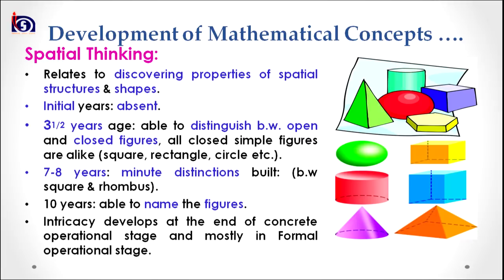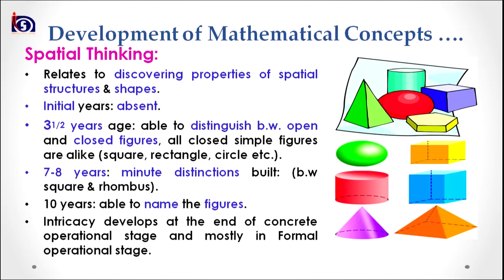The fourth type of concept under mathematical concepts is spatial thinking. Spatial thinking invariably relates to discovering properties of spatial structure and shapes. For example, if there are different kinds of shapes around the child, the child should be able to categorize them into different categories on the basis of their characteristics — only then is he or she considered to have spatial thinking. Spatial thinking in initial years is almost absent. For a young child, closed and open figures are the same; the child is not able to identify whether a figure is closed or open.